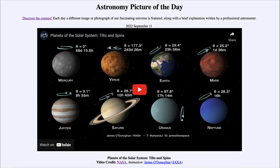Today's picture for September 11th of 2022 is titled Planets of the Solar System Tilts and Spins. What do we see here? Well, this is going to actually be a video clip that we will look at that will show all eight of the planets in our solar system.